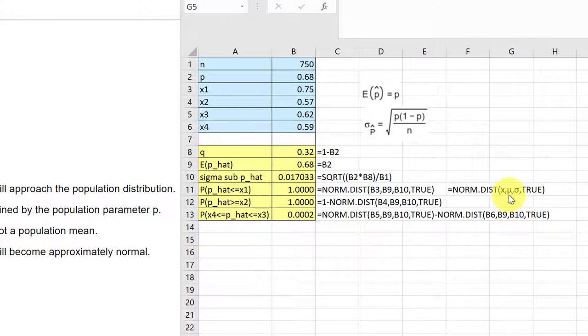The norm.dist function uses these inputs: the x value, the mean mu, and the sigma. In this case, our mean is our expected value and our sigma is our sigma sub p hat. And that's what I've got here. The norm distribution of b3, b9, b10. B3 is x1, b9 is our expected value which is the mean, and b10 is sigma sub p hat.